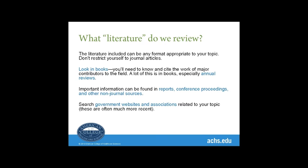What kind of literature do we actually review? We're all used to looking at books, and that's perfect — especially newer books. Anything for a literature review is generally not more than five years old. We also want to look at databases like PubMed and Natural Standards. We certainly want to make sure we're using peer-reviewed books and databases. We're also able to include reports, conference proceedings, and other non-journal sources, as long as they're legitimate and have some force of peer review.